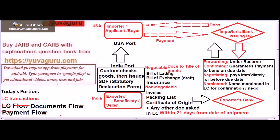This bank giving the guarantee of payment is very important. Once the guarantee of payment is received, the seller will prepare the goods and send them from India's port by ocean/sea to the USA port. Before sending from India's port, the goods must pass through customs, which checks whether they are as per the LC or the purchase order.